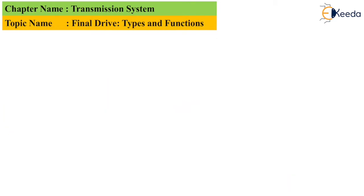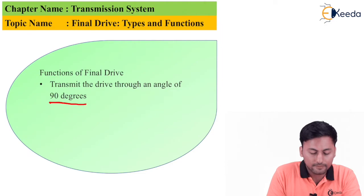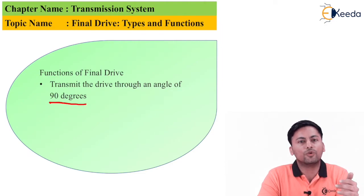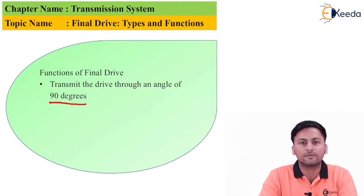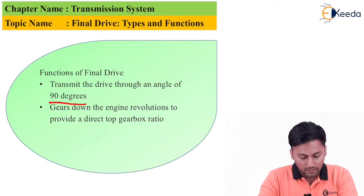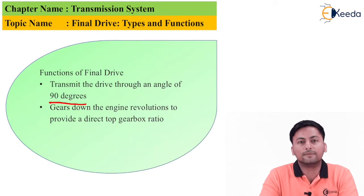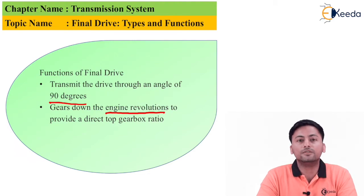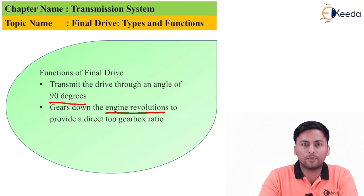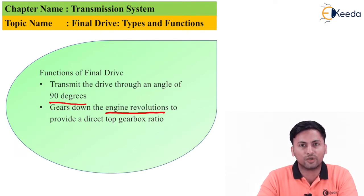Now let's look at the functions of the final drive. The first important function is that it transmits the drive through an angle of 90 degrees — the power flow was in a straight direction, but at the final drive it must be changed to power the two wheels at the rear axle. The next important function is that it gears down the engine revolution and provides the direct top gearbox ratio, since it is not always possible to change the speed and gear ratio repeatedly.